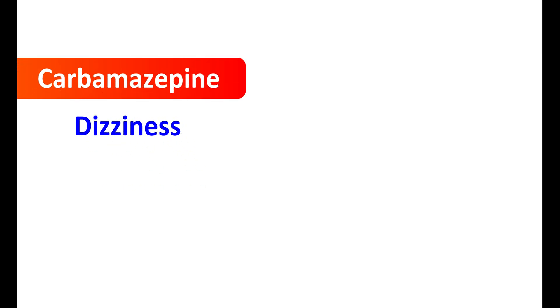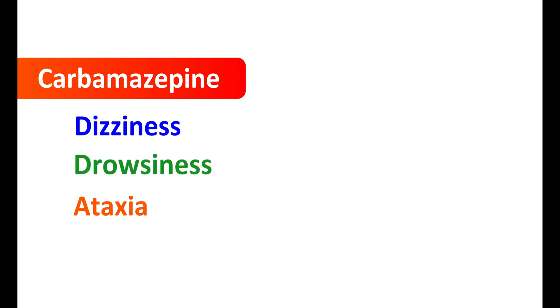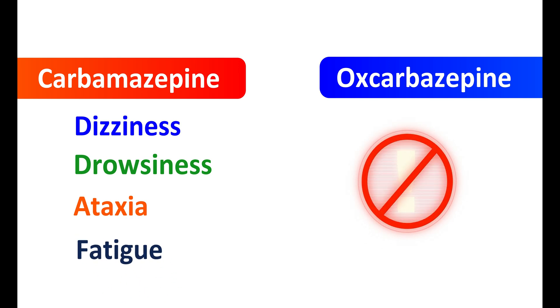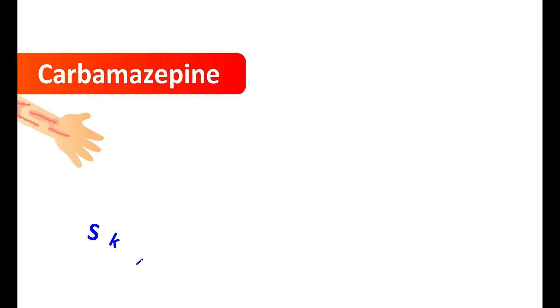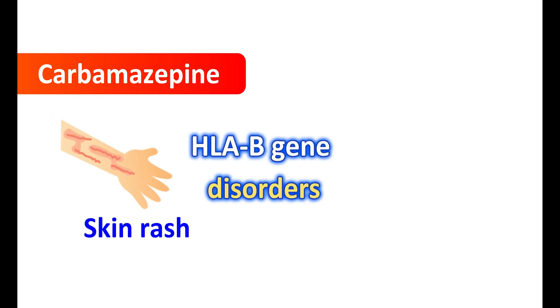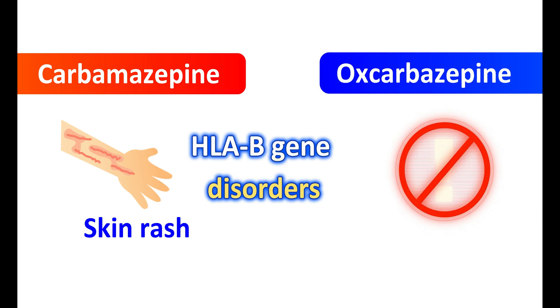What are the side effects? Carbamazepine is linked to many side effects. It mainly produces dizziness and drowsiness. It can also produce ataxia, a lack of coordination, leading to risk of falls. These side effects are somewhat less intense with use of oxcarbazepine. Fatigue is another important side effect of carbamazepine. Carbamazepine can produce a skin rash in a few people, particularly observed in those with HLA-B gene disorders. This condition is somewhat rarely observed with oxcarbazepine.